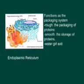The endoplasmic reticulum functions as a packaging system. There is a rough side, which handles the packaging of proteins, and the smooth side, which is for storage of proteins. That is like a water and grill exit, because people who go in there sometimes have to stay for a while and get packaged onto the bench, while others just go right past and drink water.